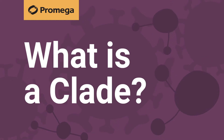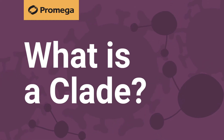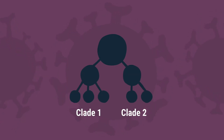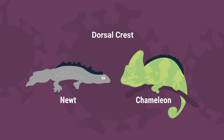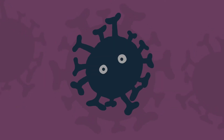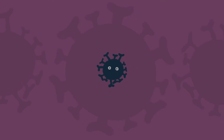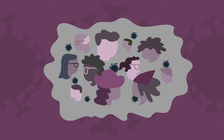What is a clade? The word clade simply refers to a group of organisms that share a common ancestor. It's a way of grouping things by their evolutionary history instead of by shared characteristics. In virology, clades help us understand how a virus has evolved over time.